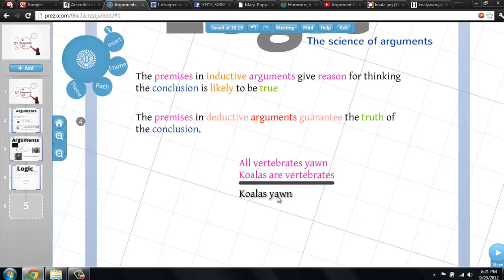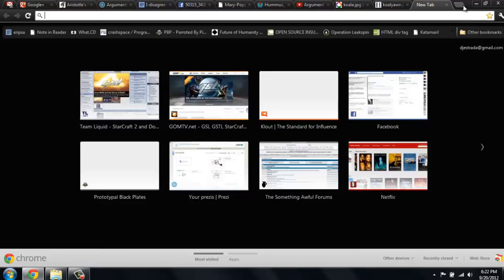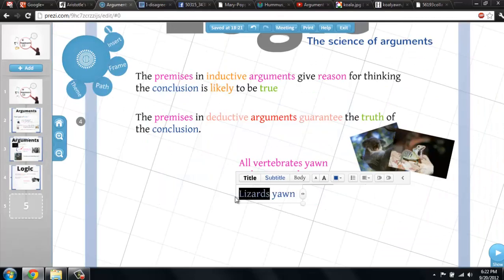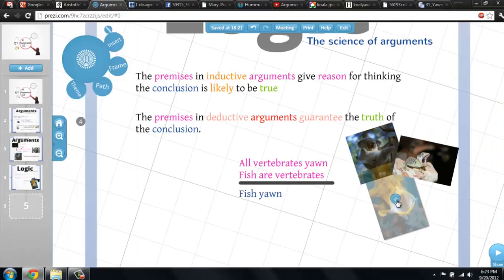Let me show you what I mean. Take the argument about koalas. The argument doesn't really have much to do with koalas. We can show that by swapping out every occurrence of koala in the argument with lizards, fish, birds, and other animals, each time generating new propositions.